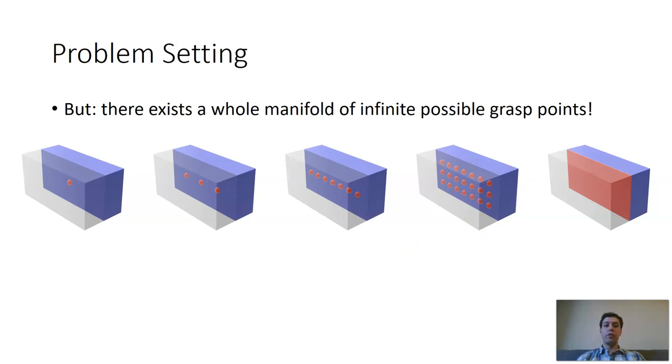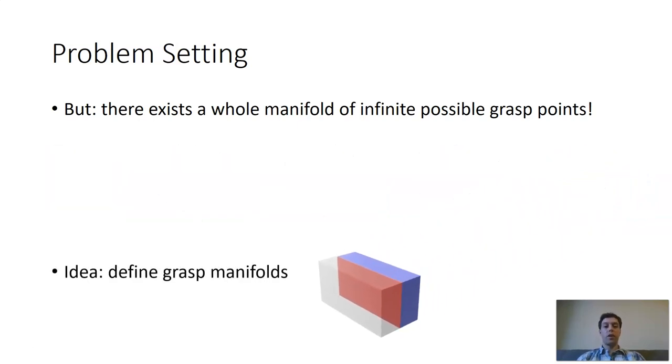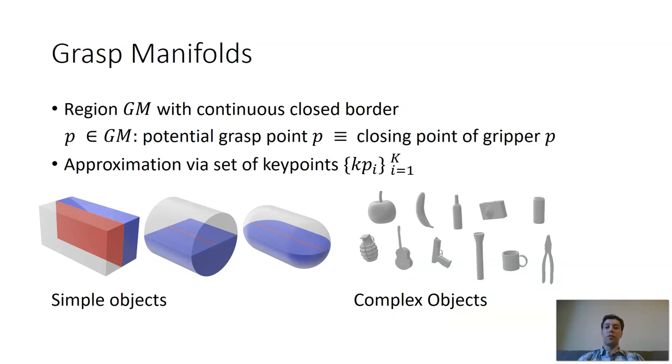Instead of just using very few points where we can grasp the object, our idea is to define the whole grasp manifold to be able to grasp any kind of object. What is a grasp manifold? We define grasp manifolds as a region GM on our object model with a continuous closed border. For any point P on this grasp manifold GM, we say that it is a potential grasp point P where we can grasp the object. This means that the closing point of our gripper, in our case we used a two-finger pinch gripper, that any closing point of the gripper is also the same point where we'd like to grasp the object on our grasp manifold.